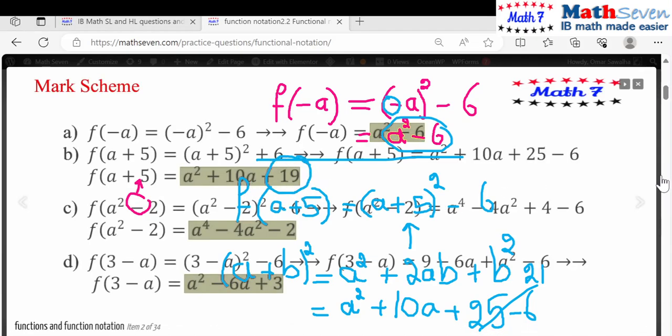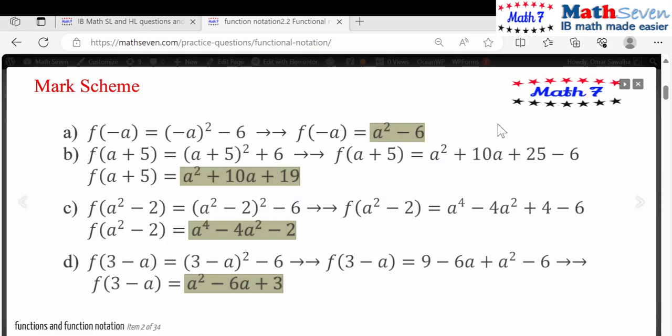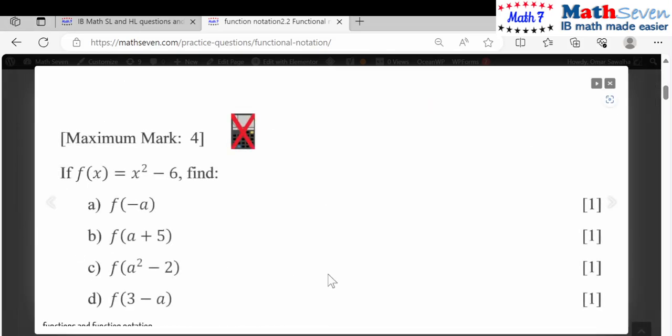Let's continue solving the questions for part c and part d. A squared minus, again it's that simple, you just put instead of x its value a squared minus 2. So this will become f of a squared minus 2.